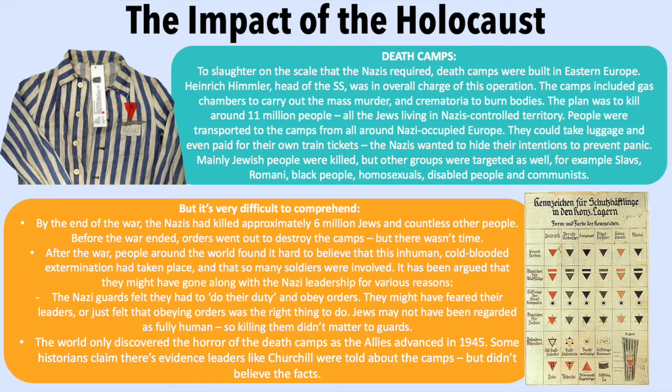By the end of the war, the Nazis had killed approximately six million Jews and countless other people. Before the end of the war, orders were sent out to destroy the camps, but there wasn't enough time. After the war, it had been argued that soldiers may have gone along with the Nazi leadership for various reasons: they felt they had to do their duty and obey orders, they might have feared the leaders, or Jews may not have been regarded as fully human, so killing them didn't matter to the guards.